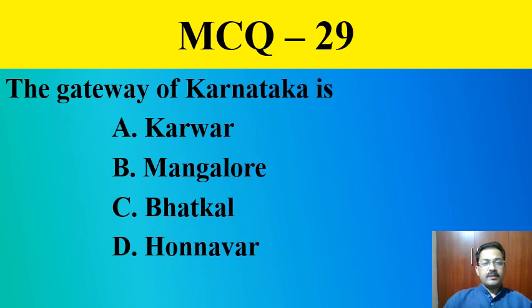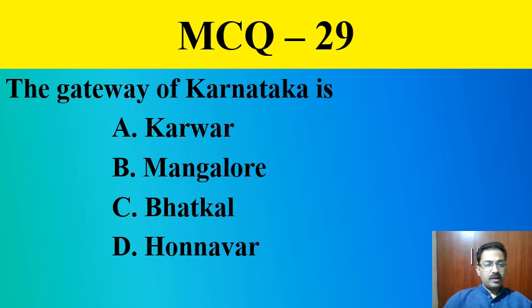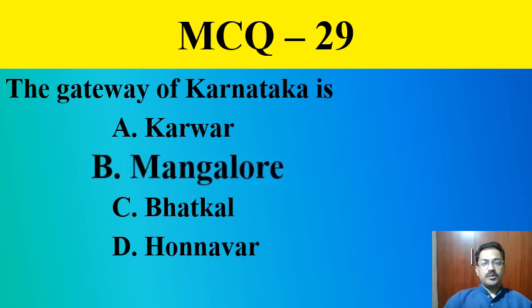MCQ question twenty-nine: The gateway of Karnataka is — Karwar, Mangaluru, Bhatkal, or Punnavar. The correct answer is Mangaluru.